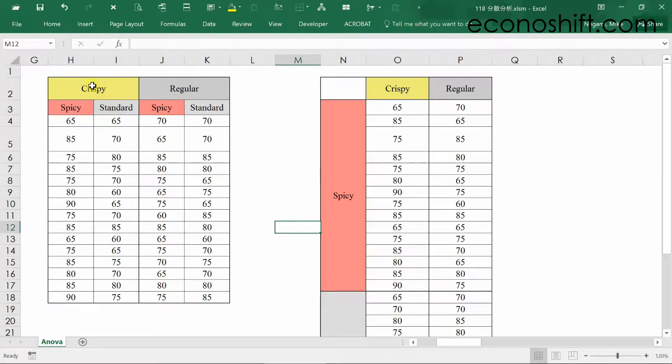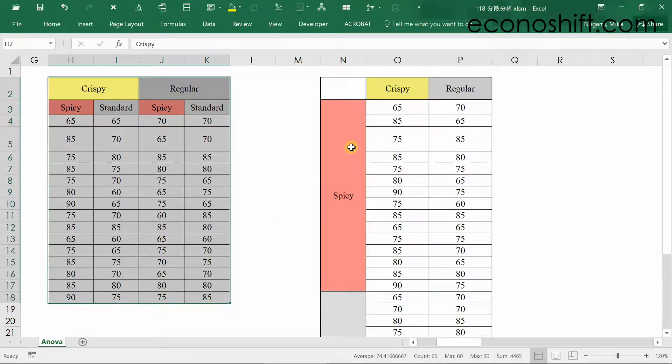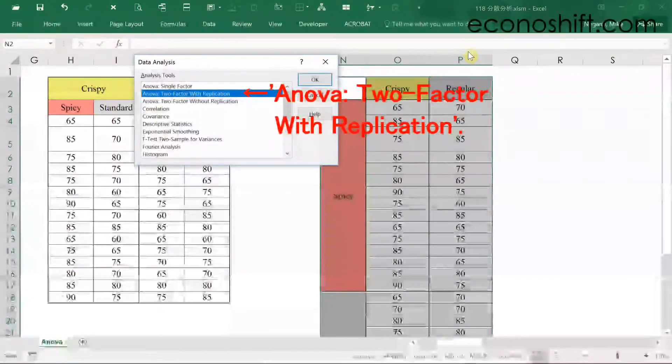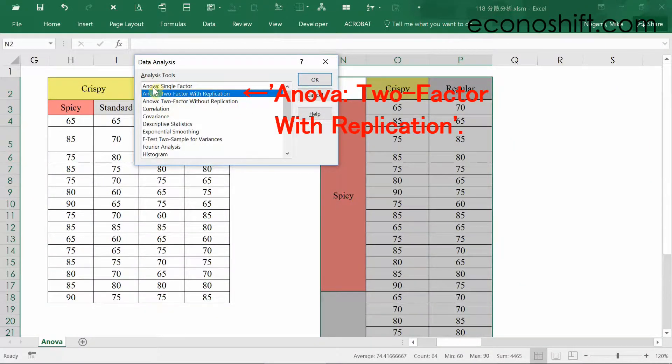I converted the data format from the flat format to the cross-tabulation format. Then, click data, data analysis, and ANOVA, two-factor with replication.